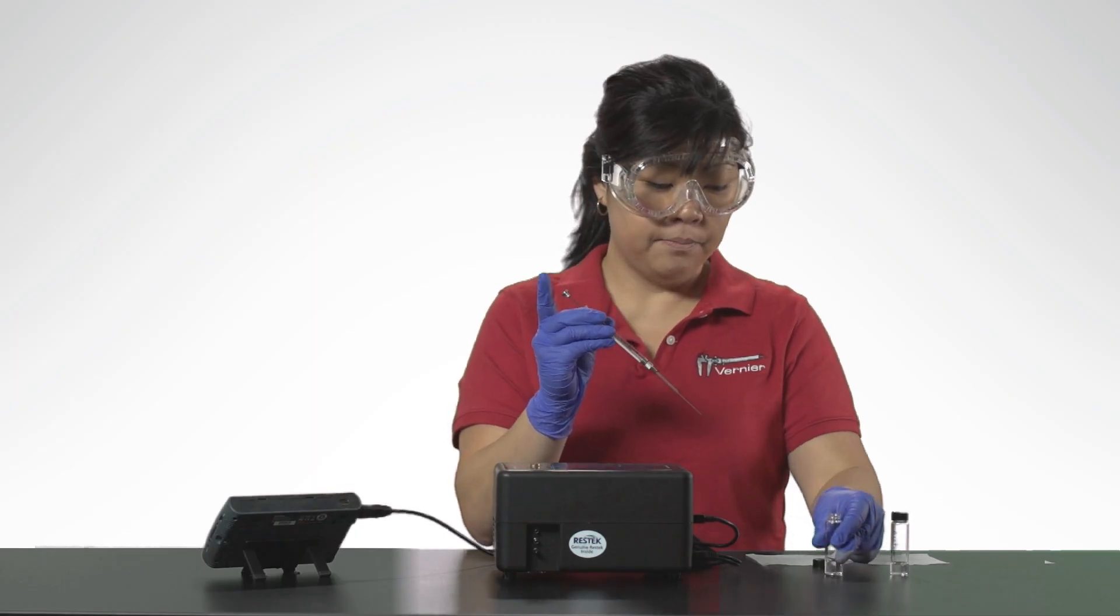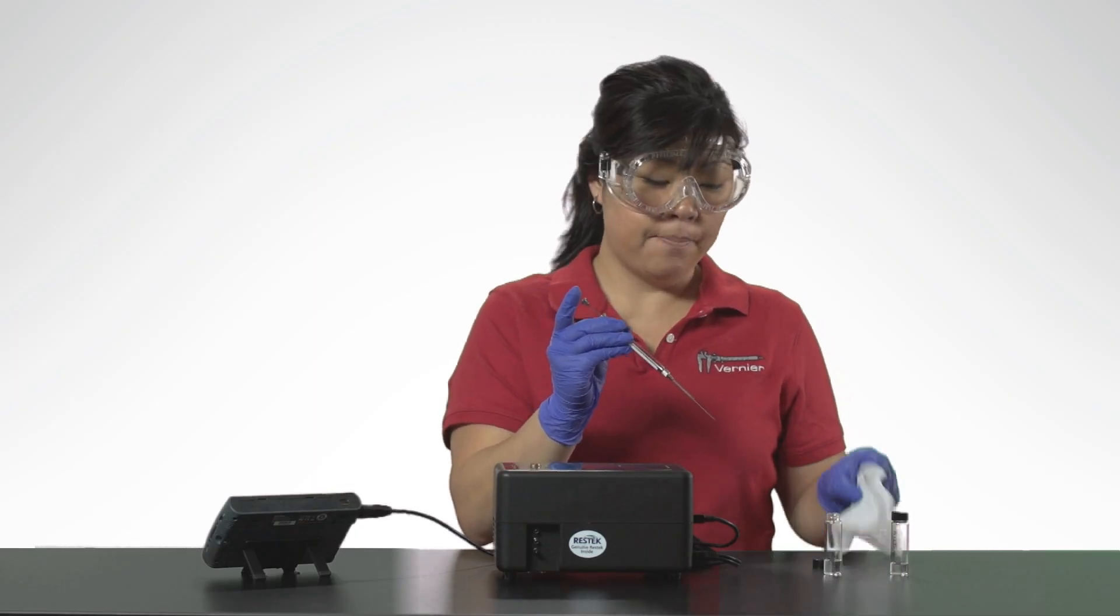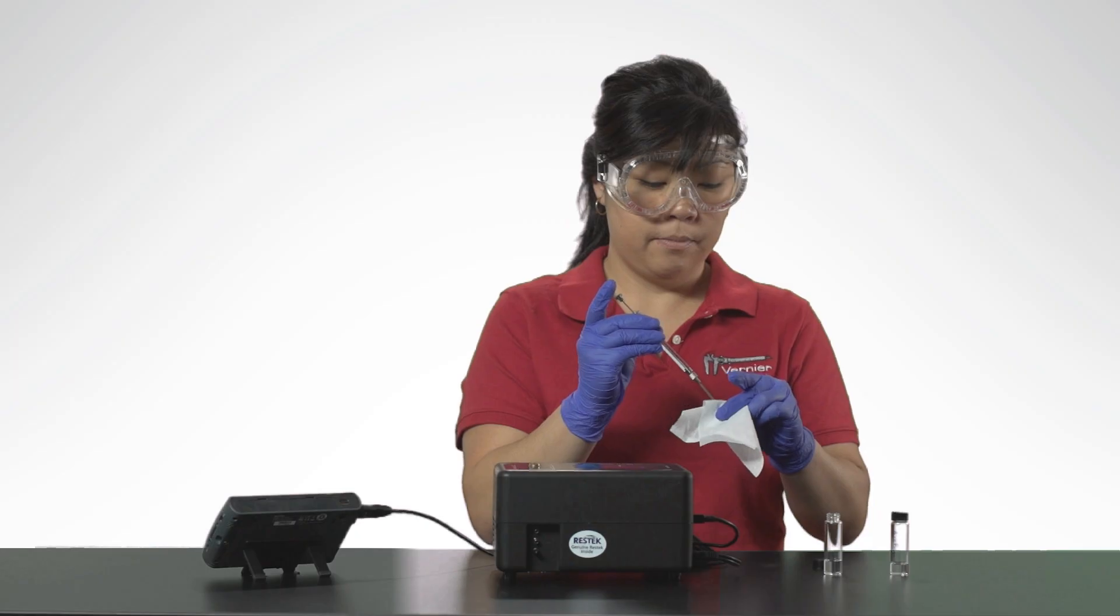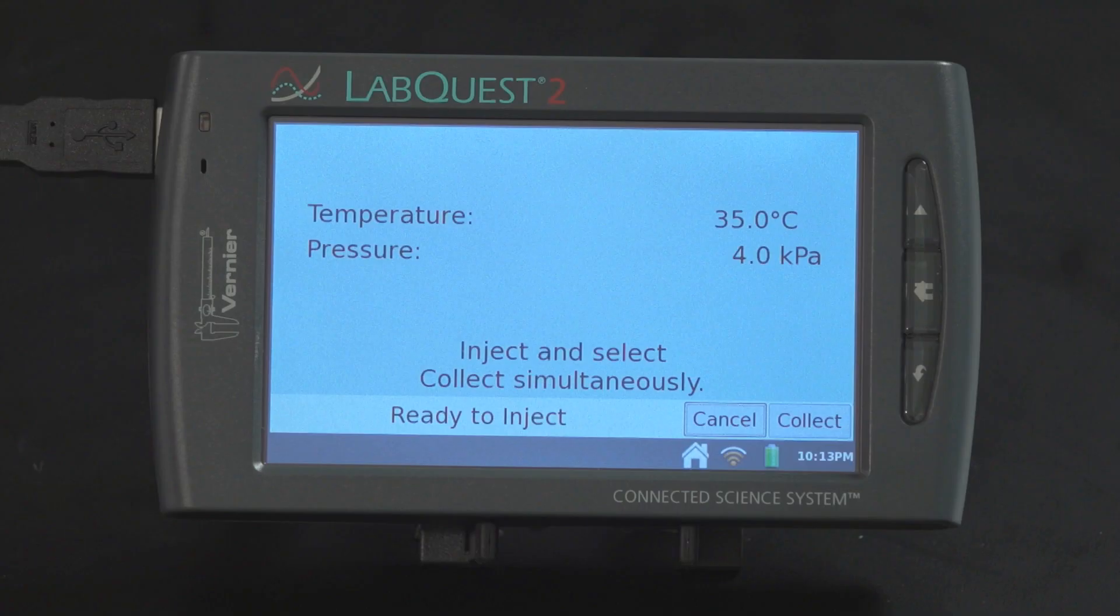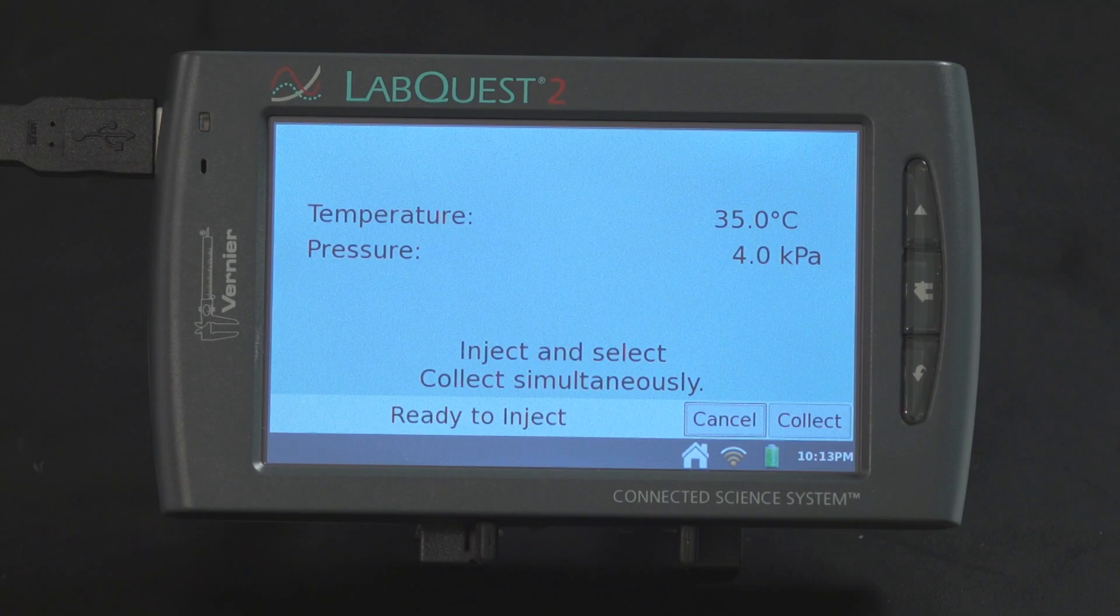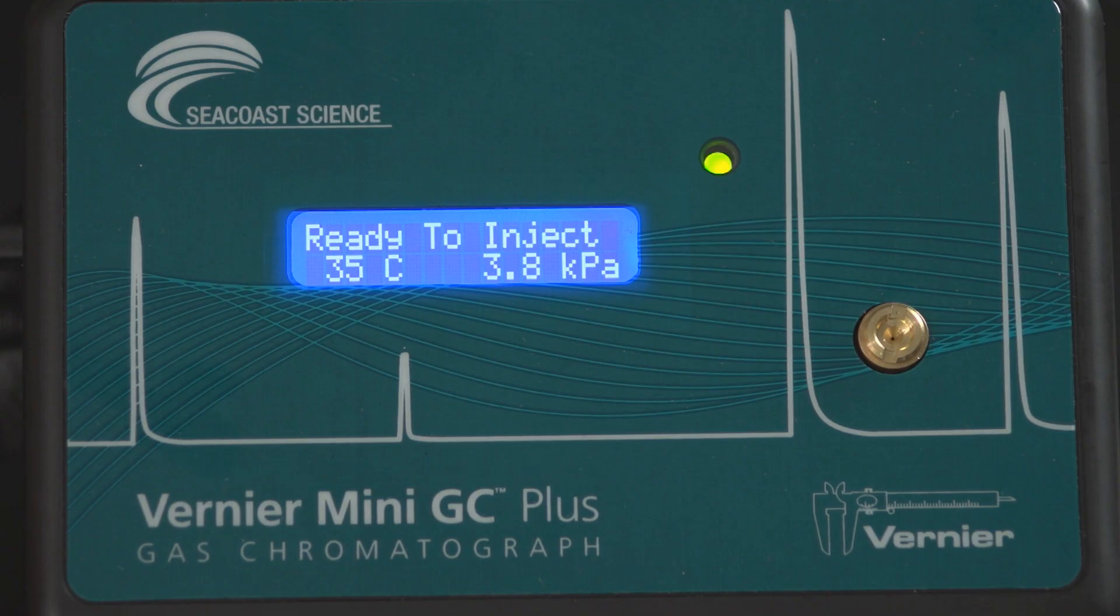After collecting your sample, gently wipe the needle from barrel to tip. When the Mini-GC Plus has reached the correct start temperature and pressure, the message reads inject and select collect simultaneously and the LED on the Mini-GC Plus is green.